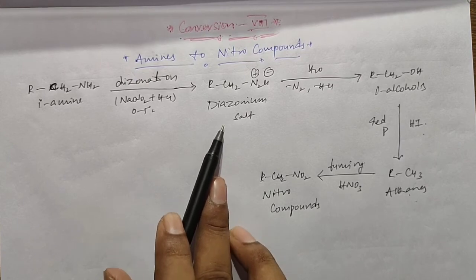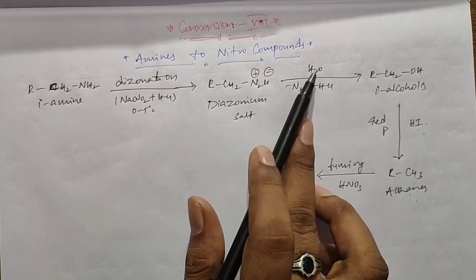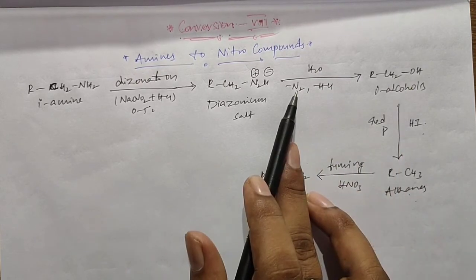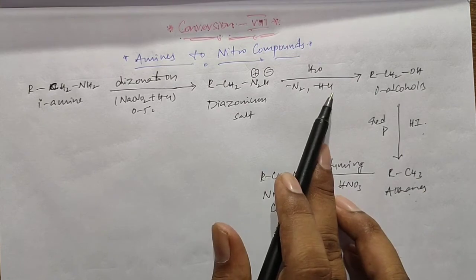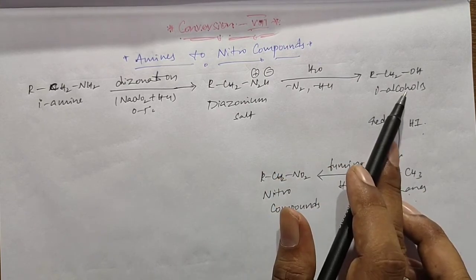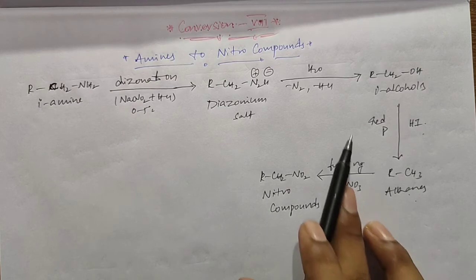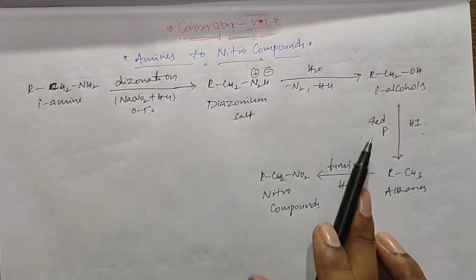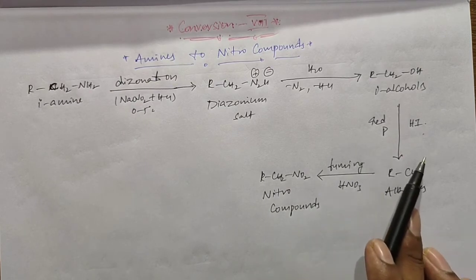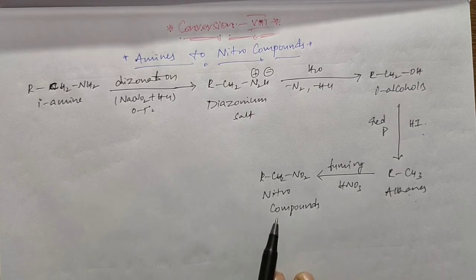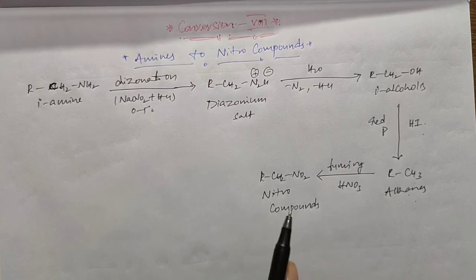The diazonium salt then undergoes hydrolysis to form primary alcohols, with loss of dinitrogen and hydrogen chloride. In the next step, the primary alcohols are converted into alkanes by reaction with red phosphorus and hydrogen iodide. Finally, the alkanes react with fuming HNO3 to form the nitro compounds.